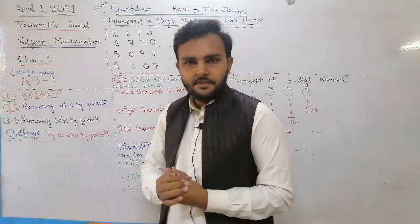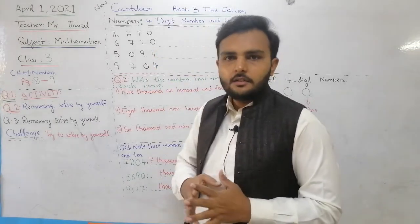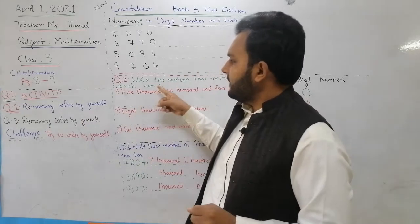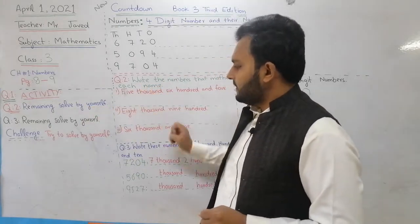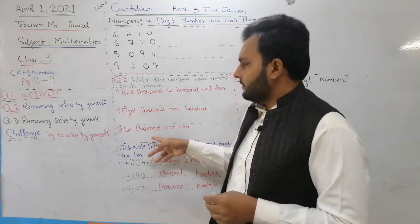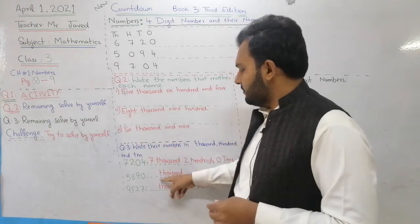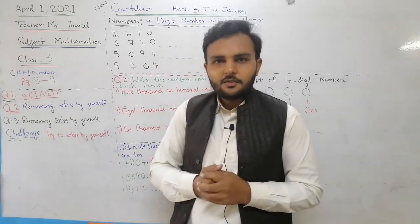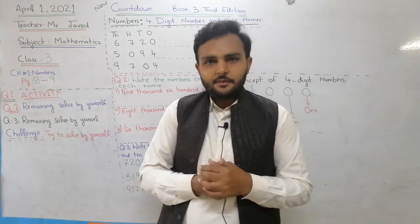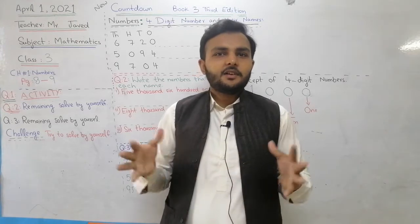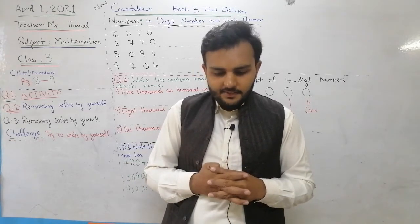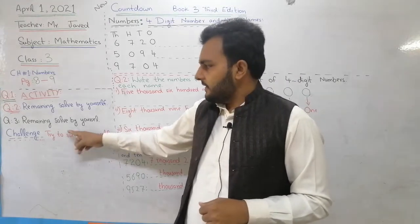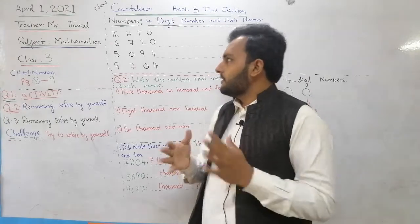Question number 1 is an activity-based question. There are three questions — I will solve some and you will solve the remaining. At last there will be a challenge for you to try to solve. It is easy and a little bit technical. You just count the tens, hundreds, thousands — in books, flowers, and on your fingers — then write it. This is a very simple challenge at the end of page 9.